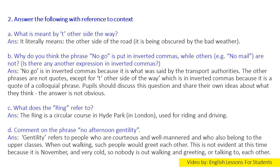Question C: What does 'the ring' refer to? Answer: The ring is a circular course in Hyde Park in London, used for riding and driving. Question D: Comment on the phrase 'no afternoon gentility'. Answer: When out walking, such people would greet each other. This is not evident at this time because it is November and very cold, so nobody is out walking and greeting or talking to each other.